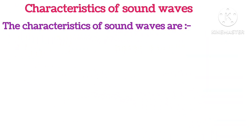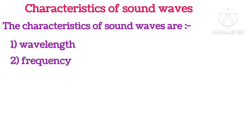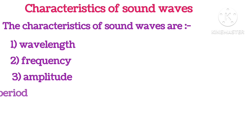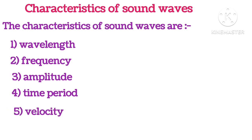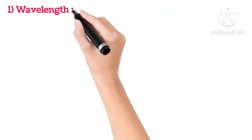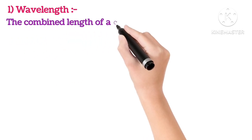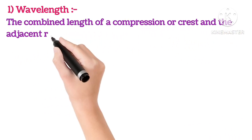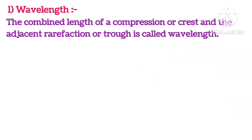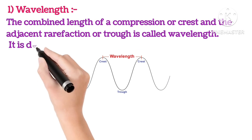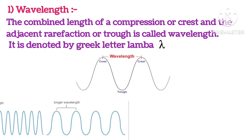The characteristics of sound waves are: wavelength, frequency, amplitude, time period, and velocity. Wavelength: The combined length of a compression (or crest) and the adjacent rarefaction (or trough) is called the wavelength, as you can see in the picture. It is denoted by the Greek letter lambda (λ). Higher frequency has shorter wavelength.